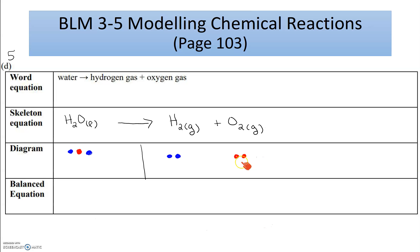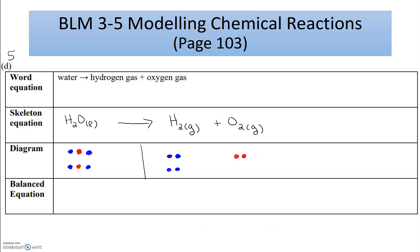Looking at oxygen, I have one red circle on the reactant side but two on the product side — I need to balance oxygen. The only way is to add another water molecule, so I add two hydrogens with an oxygen. Now I have two red circles on each side — oxygen is balanced. But now I have four hydrogens on the reactant side and only two on the product side, so I need to add another hydrogen molecule. Now I have four blue circles on each side and two red circles on each side — everything is balanced.